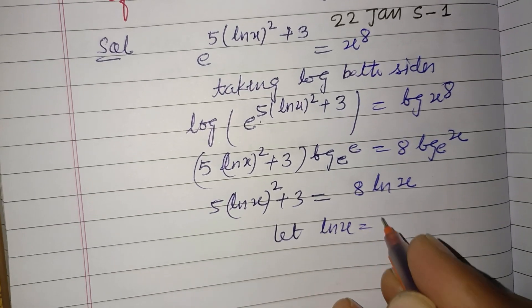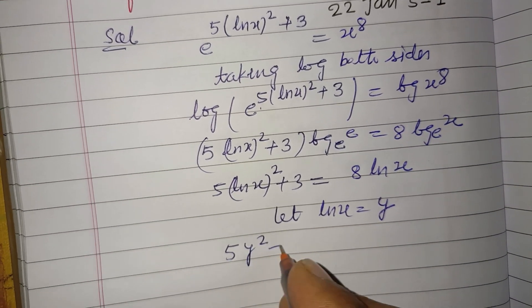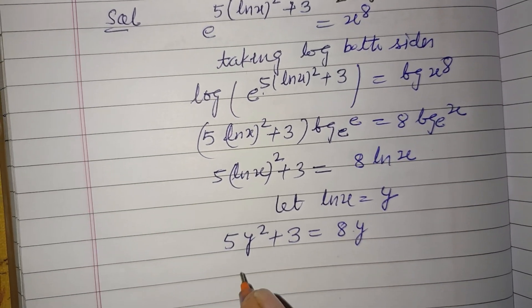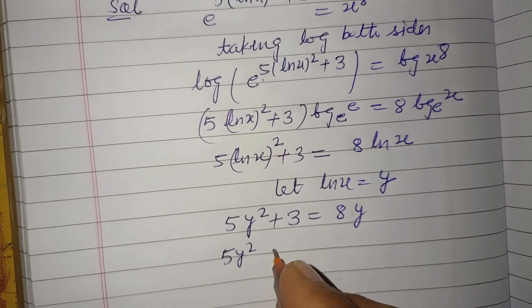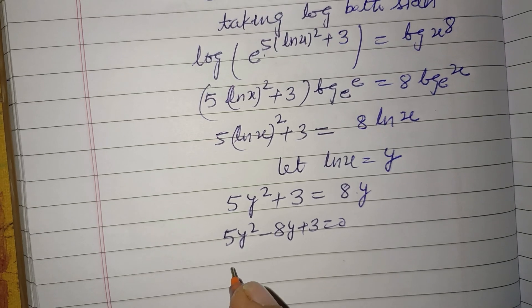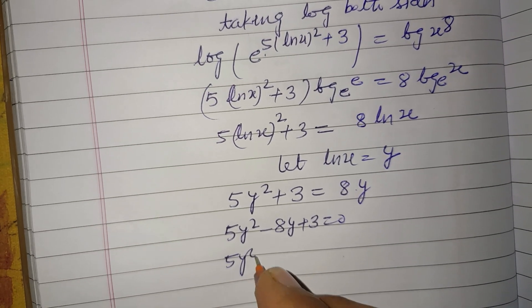Let ln x equal y. So this is 5y squared plus 3 equals 8y. Taking to one side, 5y squared minus 8y plus 3 equals 0.